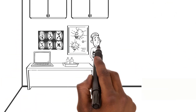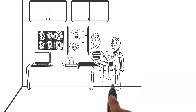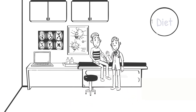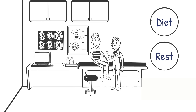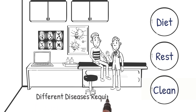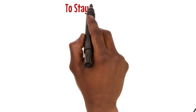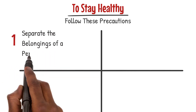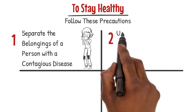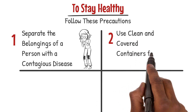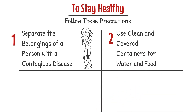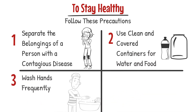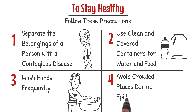If a family member is sick, see a doctor promptly, follow their recommendations, provide a healthy diet, ensure rest, and maintain cleanliness. Different diseases require different care strategies. To stay healthy: separate the belongings of a person with a contagious disease, use clean and covered containers for water and food, wash hands frequently, and avoid crowded places during epidemics.